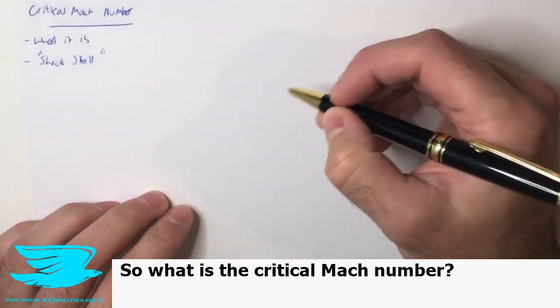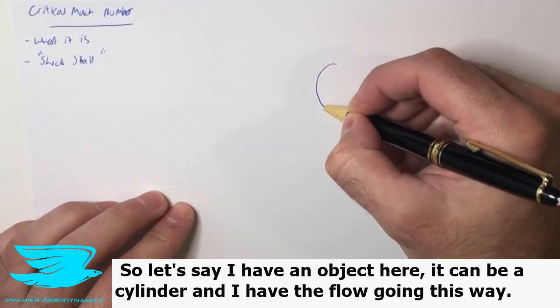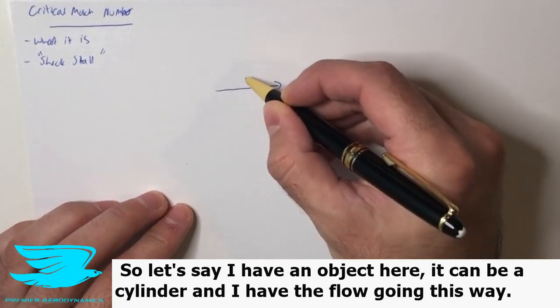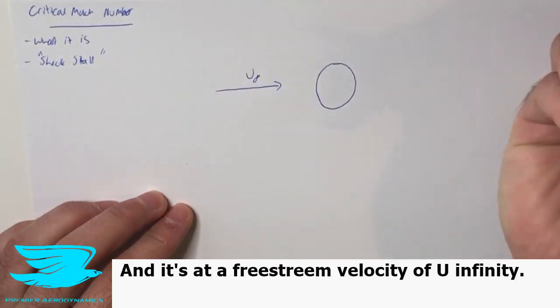So what is the critical Mach number? Let's say I have an object here, it can be a cylinder, and I have the flow going this way. And it's at a free stream velocity of u infinity.